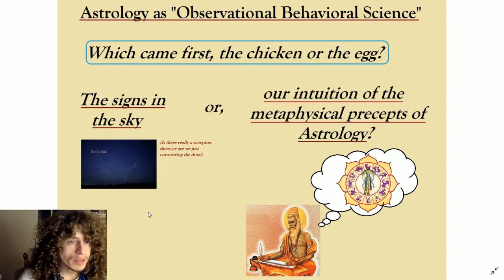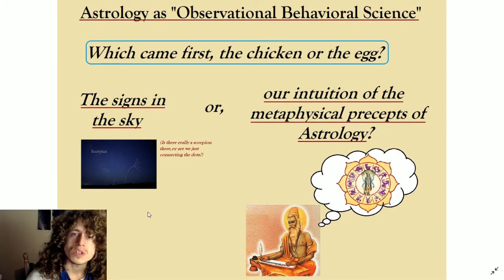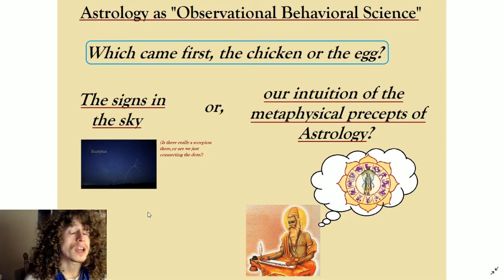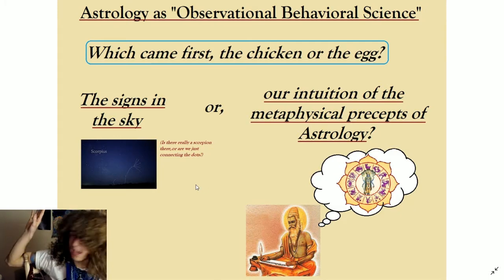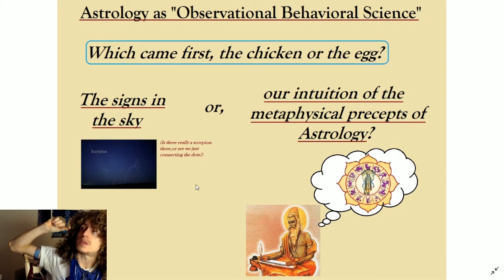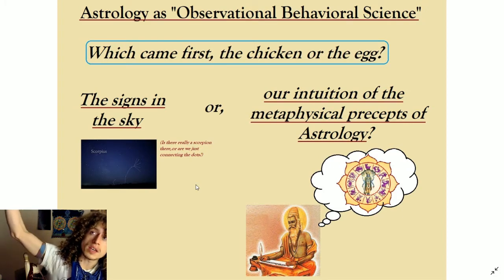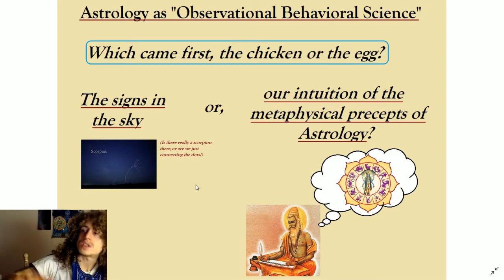How many people have chosen that they display these characteristics — getting the hard data on it. So when it comes to how astrology came to be, it's always an interesting thing to ask. It's this chicken or the egg scenario. What came first — the signs in the sky, or our intuition of the metaphysical precepts of astrology? When we look out into the starry sky and we see Scorpio there in the stars, and we notice that when the sun goes into that area and somebody is born there, we notice that they display certain traits.